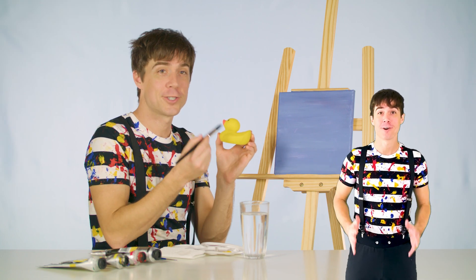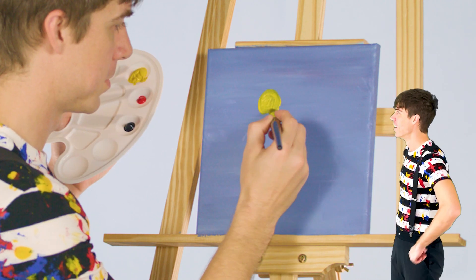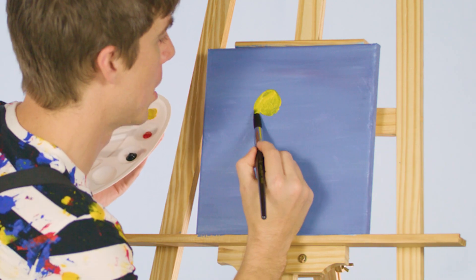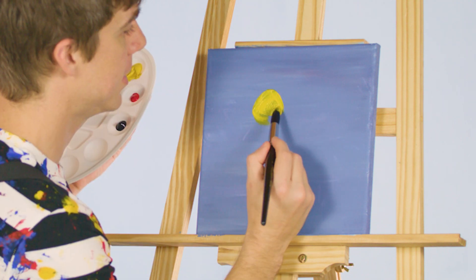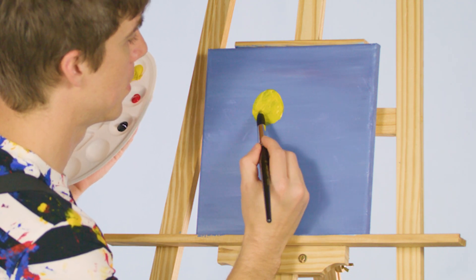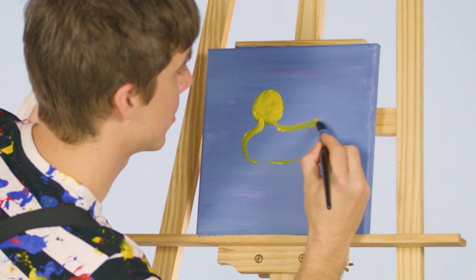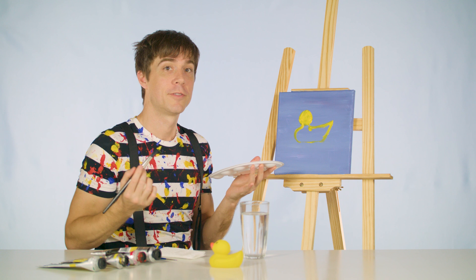First, I'm going to paint a circle for the head. Jinx. Painting a circle is fun. And the body will be like this. We have the basic shape of the rubber ducky.